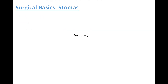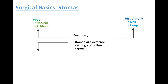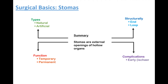Okay, let's summarize. Stomas are external openings of hollow organs — they can be natural or artificial. Structurally, they are either end stomas or loop stomas; loop stomas are more easily reversed. Functionally, they can be used as a temporary measure or they can be used permanently. They can have early complications like ischemia or late complications like parasternal herniations.